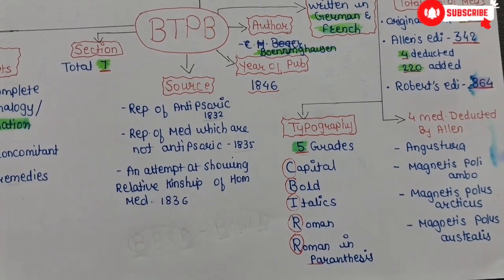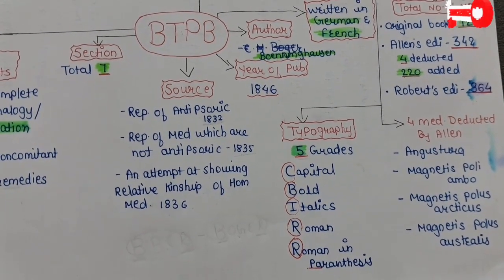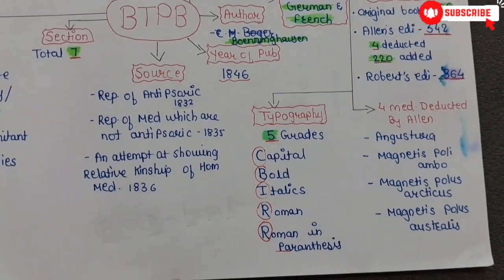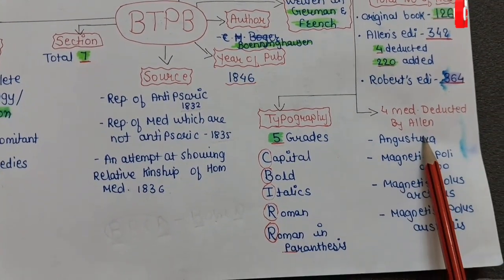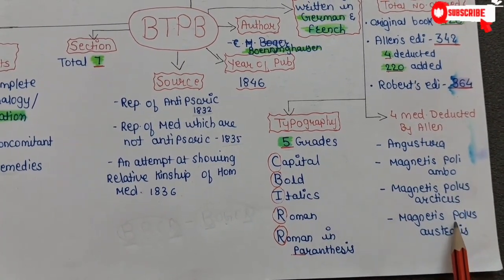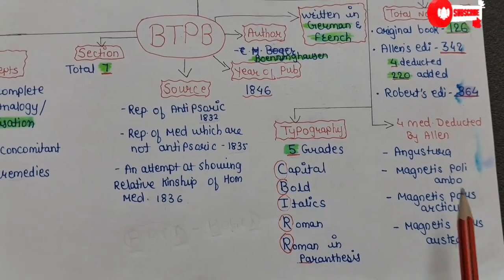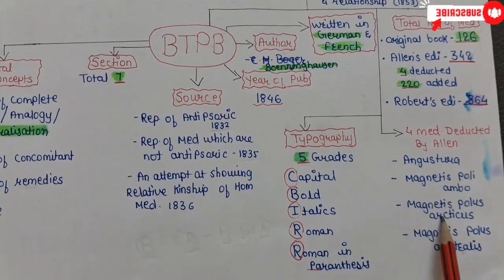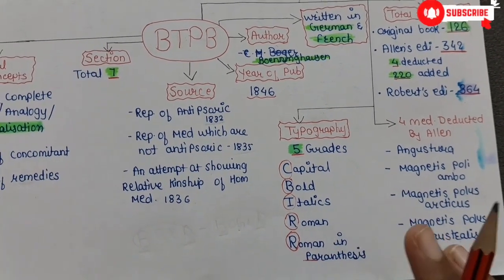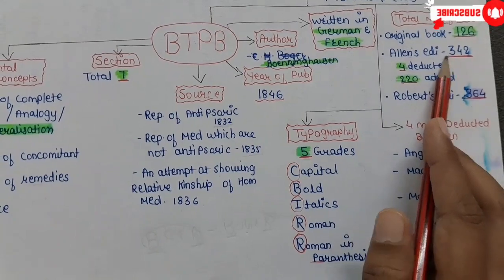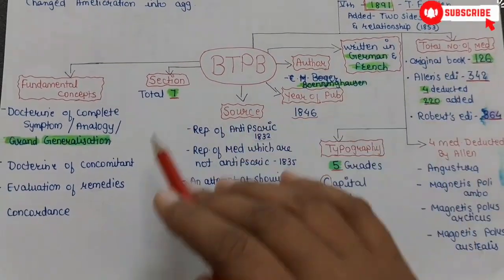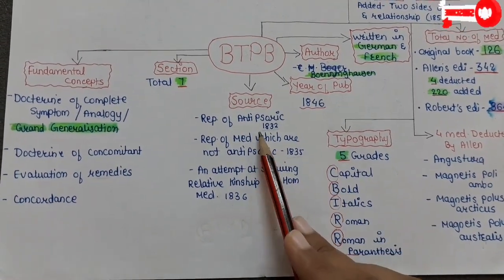In Robert's edition the number is 364. Remember these numbers: 126 in the original, 342 in Allen's edition, and 364 in Robert's edition. The four medicines deducted by Allen are Angustura, Magnetis Polyambo, Magnetis Polus Arcticus, and Magnetis Polus Australis — basically all three magnets and Angustura. Allen deducted these four and added 220 new remedies to make 342.